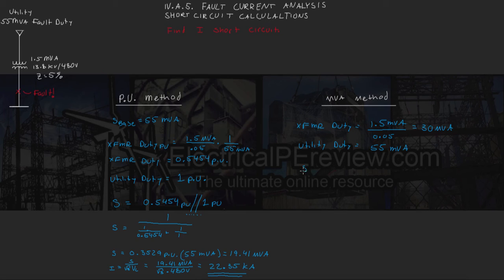So we know our S, our complex power of our fault, is going to be 55 MVA in parallel with 30 MVA.